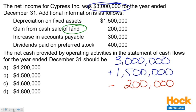The third item is the increase in accounts payable. Accounts payable are a liability, and an increase in a liability is an addition back to net income, so that's plus $300,000. The reason is that with a payable, we incurred an expense — so our income went down — but we didn't pay it yet, meaning the cash hasn't yet gone out.